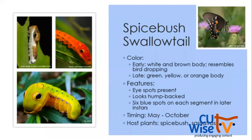The spicebush swallowtail caterpillar looks very similar. The early instar resembles a bird dropping, but this caterpillar has eye spots in that early growth stage — one easy way to tell it apart from the tiger swallowtail. Both look like bird droppings, but the spicebush has eye spots. Later instars can be green, yellow, or orange, and have six blue spots on each segment. Again, it looks humpbacked. May through October you can find them on spicebush and sassafras plants.